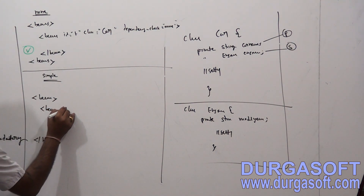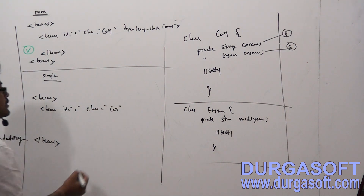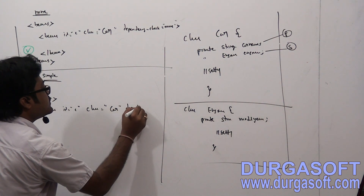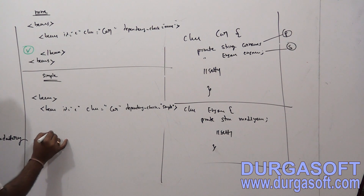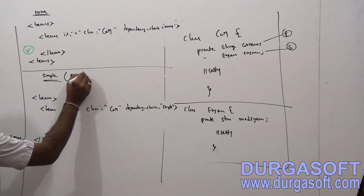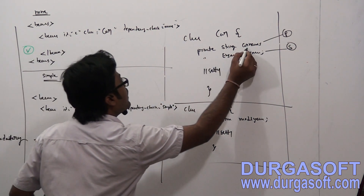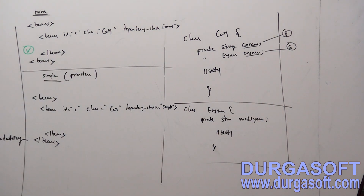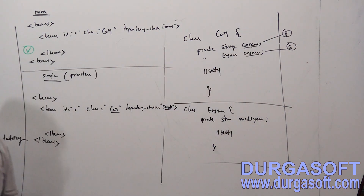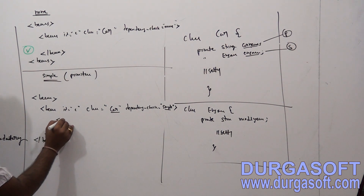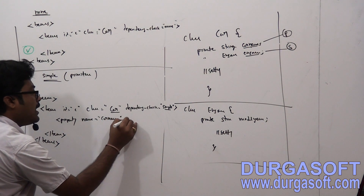If you apply dependency-check simple on the car bean, specifying the bean id and class as car class, then it is mandatory to pass only primitive values. We have one primitive value — car name. So compulsory, you should call the car name setter method. The primitive data type setter method is mandatory to call.